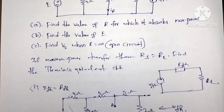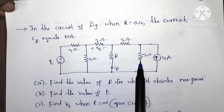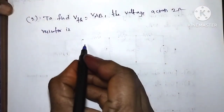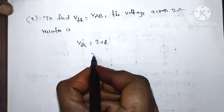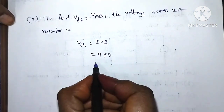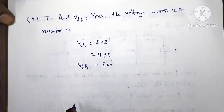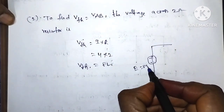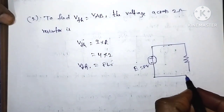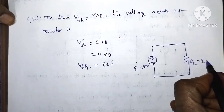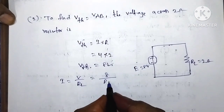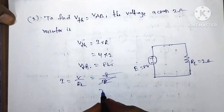Next, find the Thevenin voltage Vth. The voltage across the 2-ohm resistor is V equals IR. With R equal to 2 ohms and using the given current, Vth equals 8 volts. The current I equals V by R, which gives I equal to 4 amps.